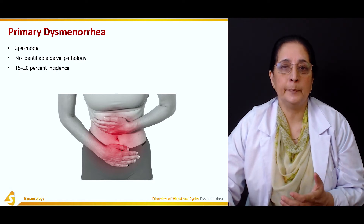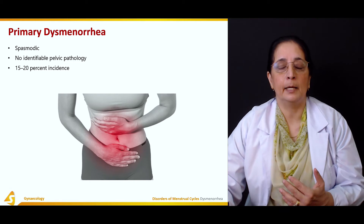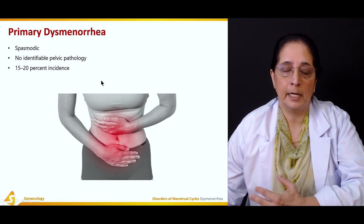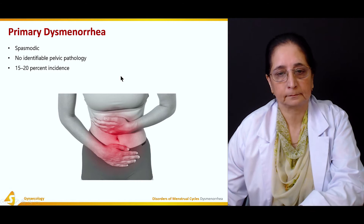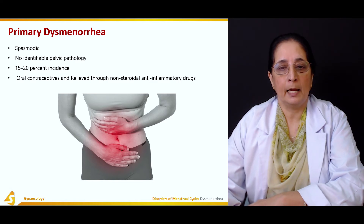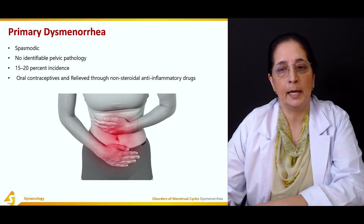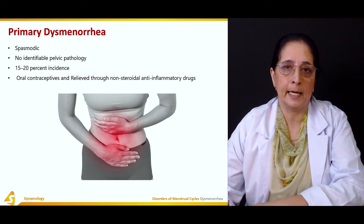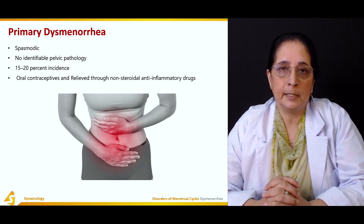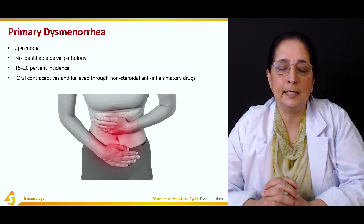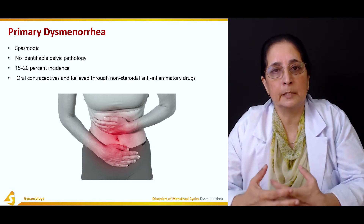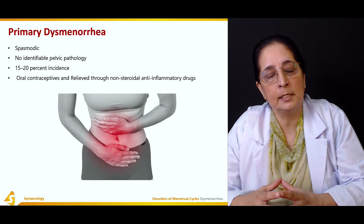15 to 20 percent of females come to see the doctor with primary dysmenorrhea, having had this dysmenorrhea from the beginning. Treatment includes oral contraceptives and non-steroidal anti-inflammatory drugs (NSAIDs). Oral contraceptives are also very helpful in relieving primary dysmenorrhea, and after improvement over three, four, or five cycles, these can be stopped.